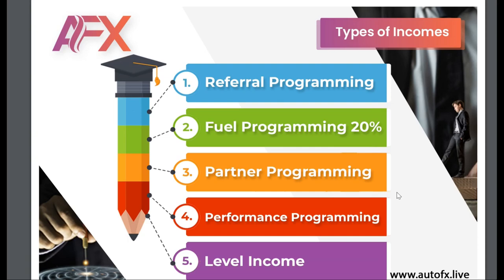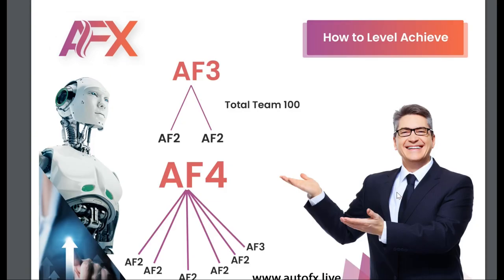The five income streams are: referral programming income, flow programming income, partner programming income, performance programming income, and level income. Let's talk about them one by one. The first level is AF1 — that's rank one.